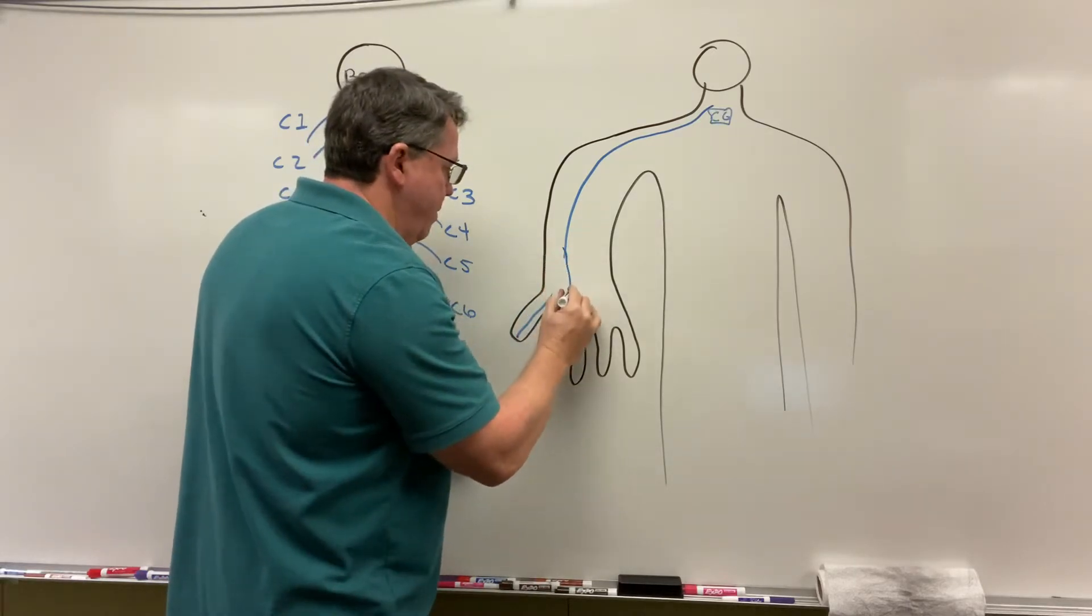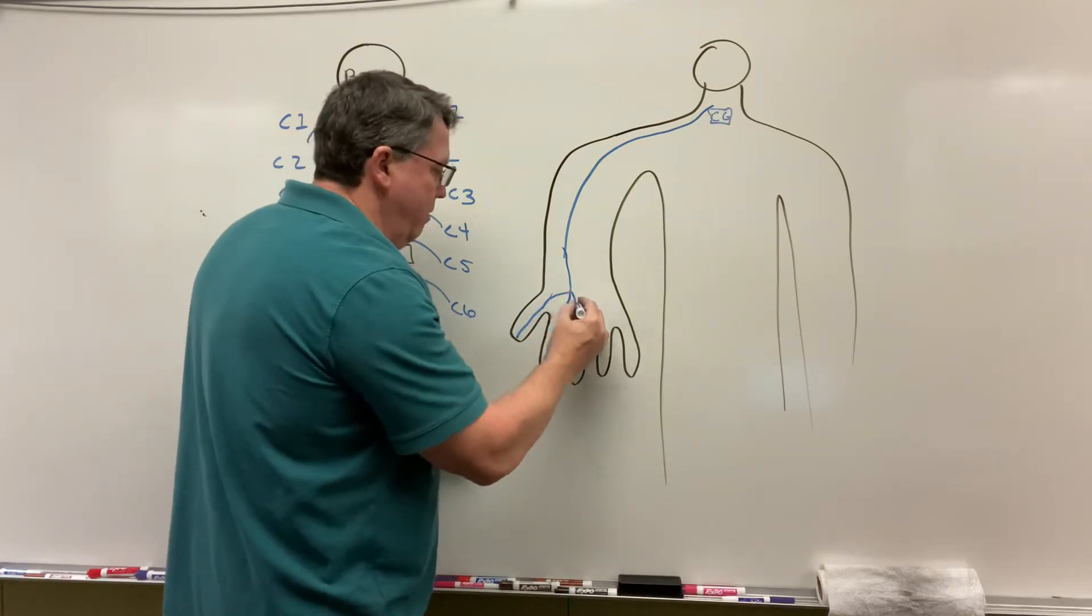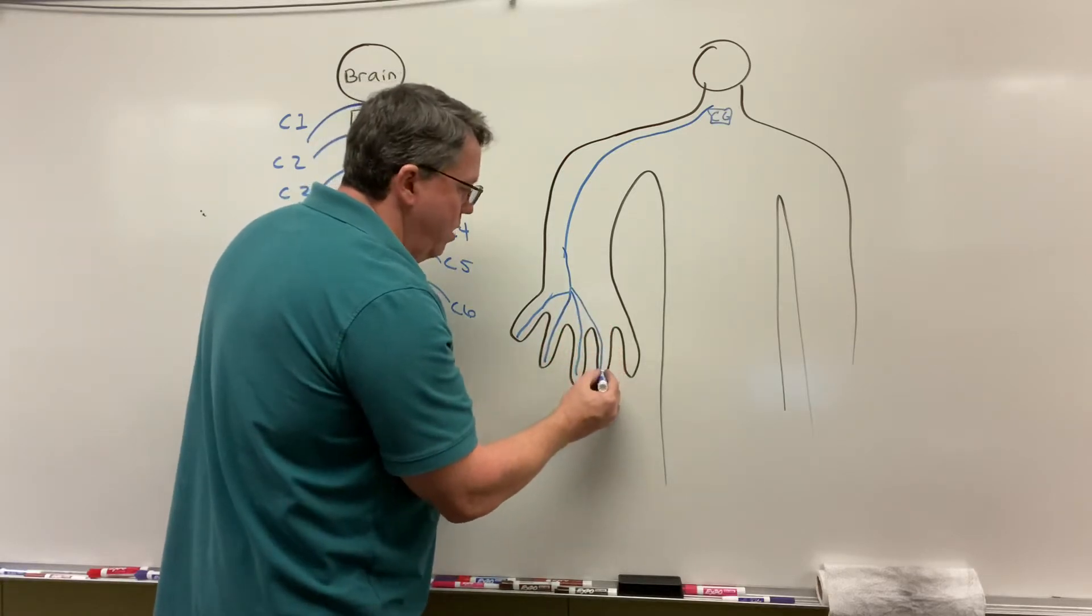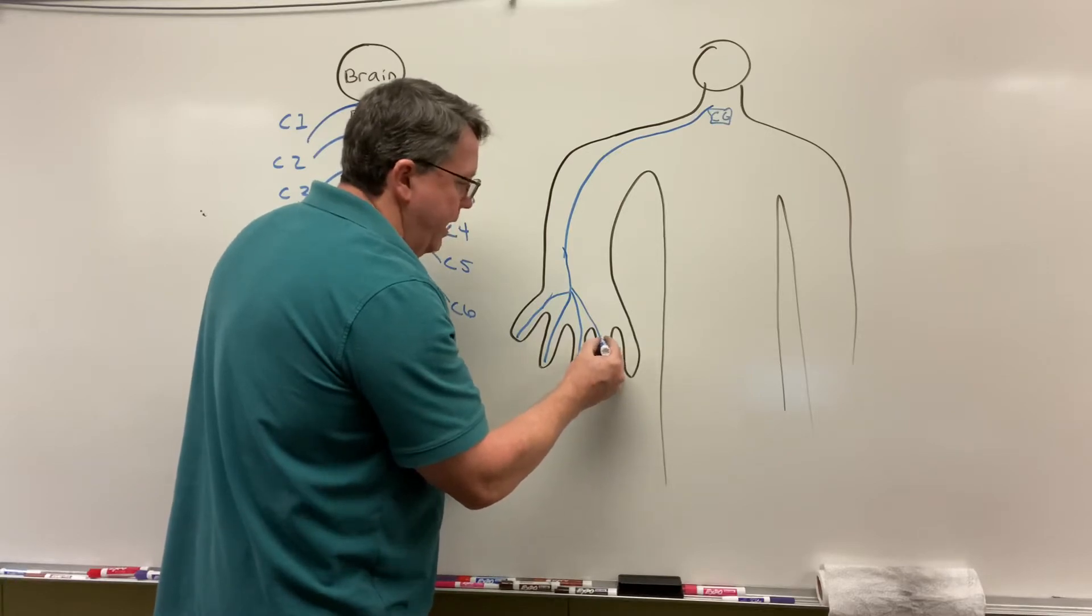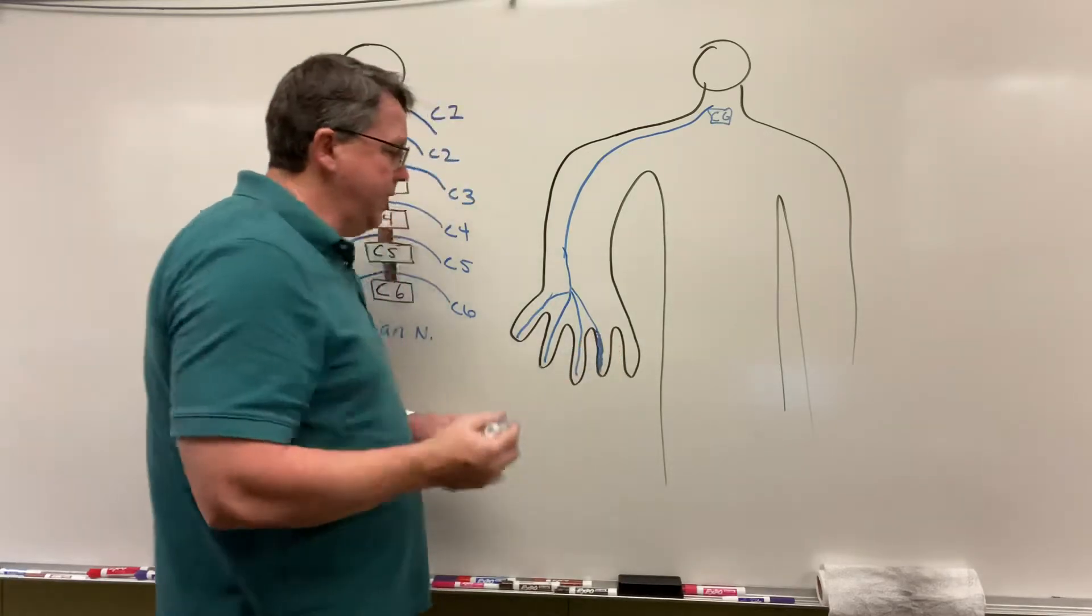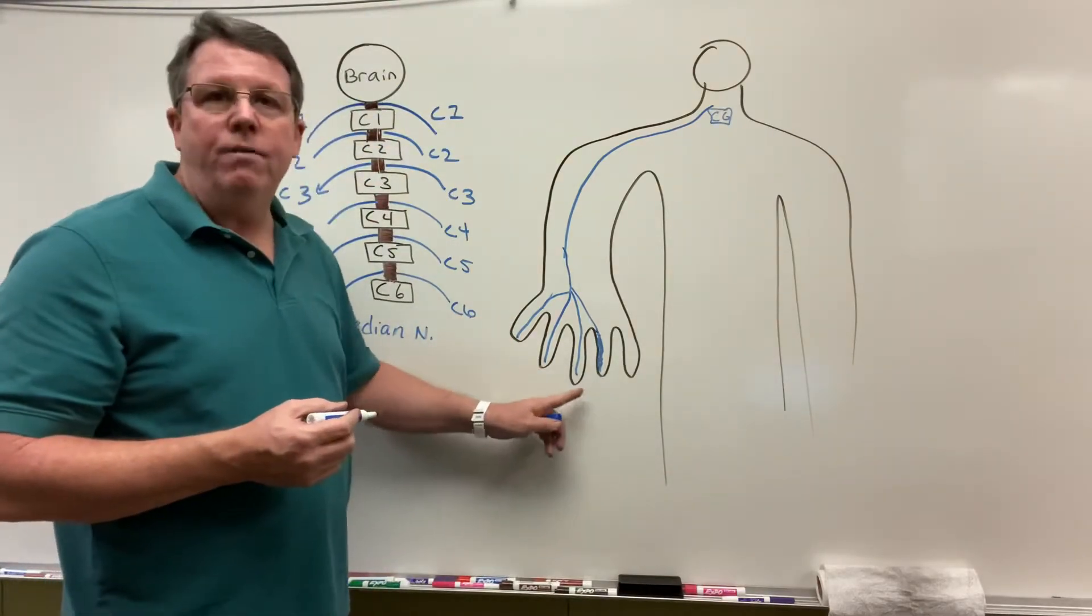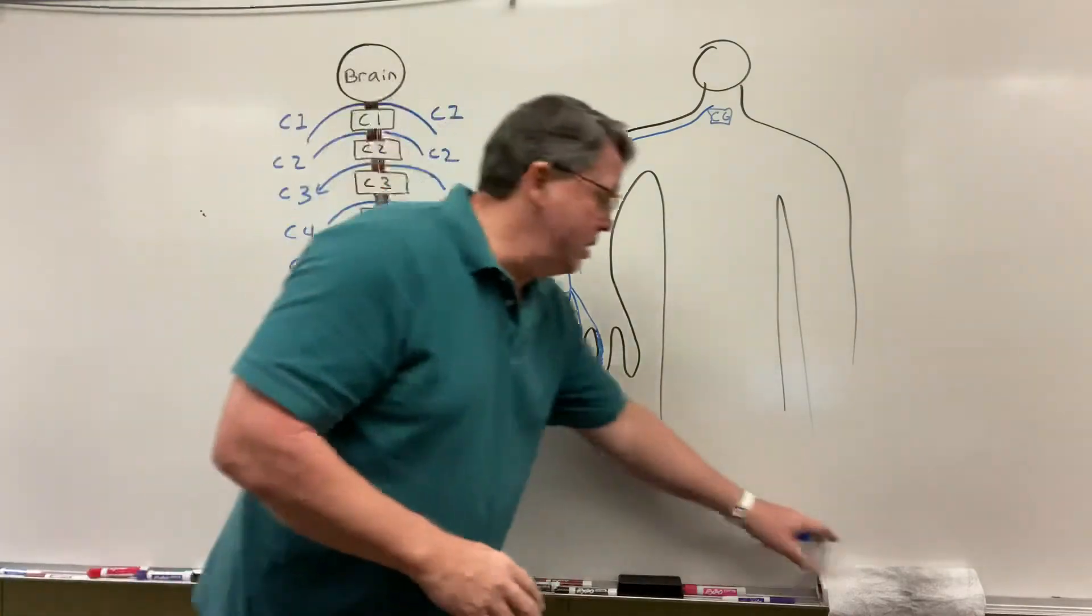It's going to branch and go into the thumb, into the index finger, into the middle finger, and then do the innervation for half of the ring finger. In carpal tunnel syndrome, I'm going to get symptoms in my thumb, my index finger, my middle finger, and half of my ring finger. Let's take a look at what actually causes this.